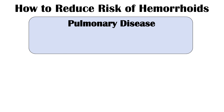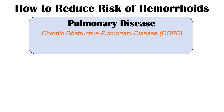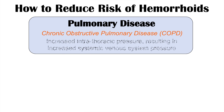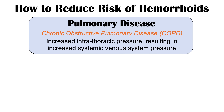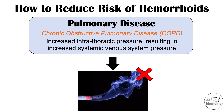Another risk factor is pulmonary disease, more specifically chronic obstructive pulmonary disease or COPD. COPD can lead to increased intrathoracic pressure — pressure within the chest — which results in reduced venous return to the heart, leaving more blood and more pressure in the venous system, ultimately increasing pressure within the hemorrhoids. It's important to prevent or reduce the progression of COPD, and quitting smoking is key to achieving that.